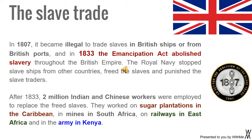The Royal Navy stopped slave ships from other countries, freed the slaves and punished the slave traders. After 1833, 2 million Indian and Chinese workers were employed to replace the freed slaves. They worked on sugar plantations in the Caribbean, in mines in South Africa, on railways in East Africa and in the army in Kenya.